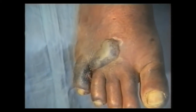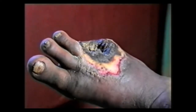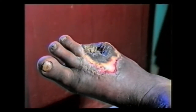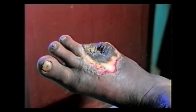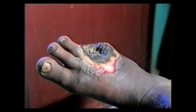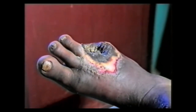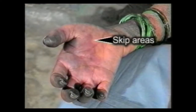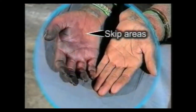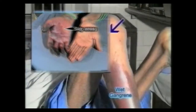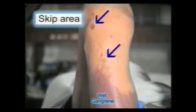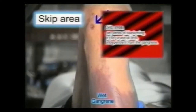This bleb proximal to the gangrenous toe indicates a spreading gangrene. Redness, edema and slough around the site of amputation of a gangrenous toe indicate infection and wet spreading gangrene. Note the black colored skip areas in the palm suggesting proximal spread of the gangrene. Skip areas are areas of blackening in the proximal limb independent from the gangrene.